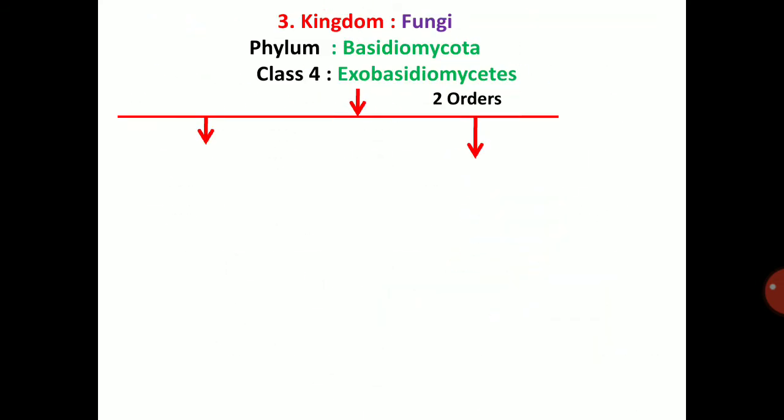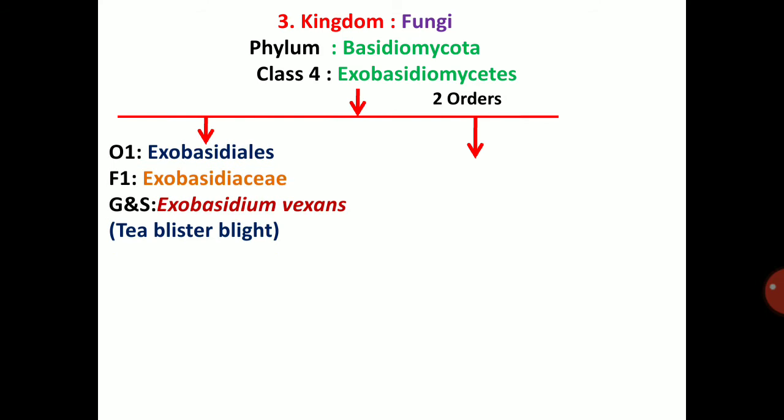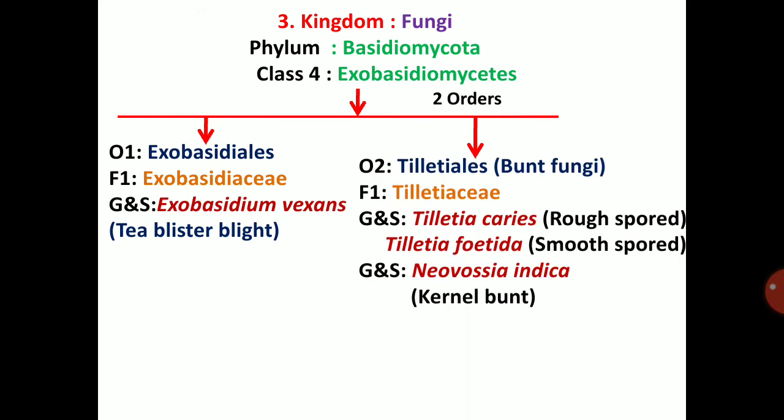This is about the general characters of smut fungi. Smut fungi have teliospores and basidiospores — basidiospores are called as sporidia. The next class is Exobasidiomycetes, which contains two orders. First order is Exobasidiales, family Exobasidiaceae, genus Exobasidium vexans, which causes Tea Blister Blight. Next is Tilletiomycetes — bunt fungi, family Urnus Tilletiaceae, genus Tilletia caries (rough-spored bunt) and Tilletia foetida (smooth-spored bunt). Bunt means nothing but stinking smut — when smut has a bad odor present, that is called bunt. Third genus is Neovossia indica — kernel bunt of wheat.